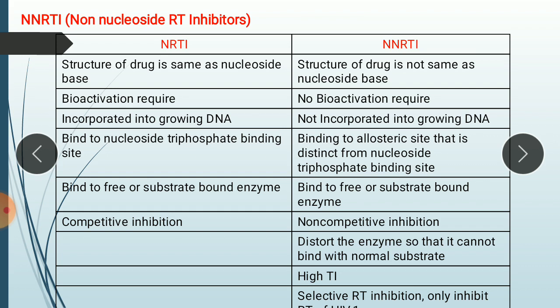In the first step — conversion of RNA into cDNA-RNA complex — the polymerase active site of the reverse transcriptase enzyme is required. In short, reverse transcriptase enzyme is involved in synthesis of DNA from RNA. The drug class called reverse transcriptase inhibitor inhibits this enzyme, therefore preventing the synthesis of DNA.